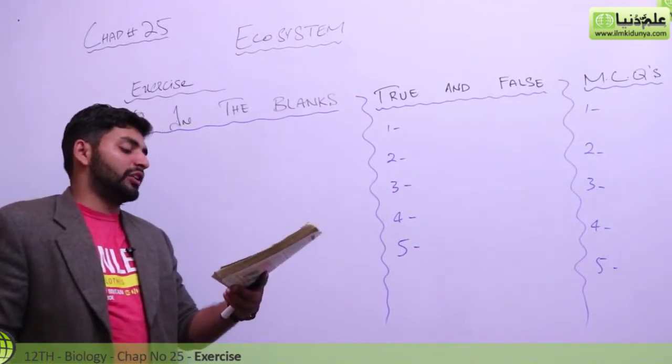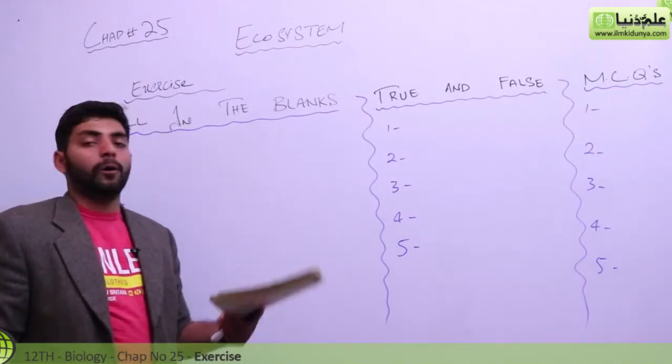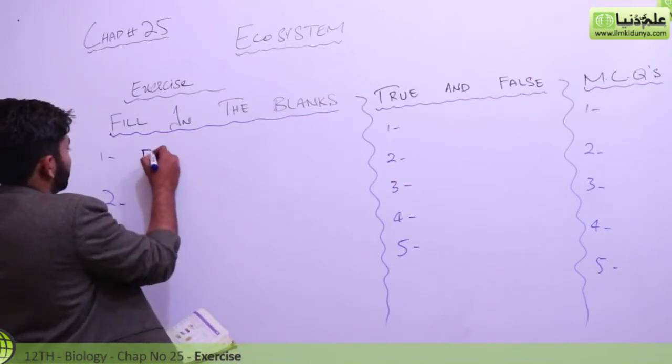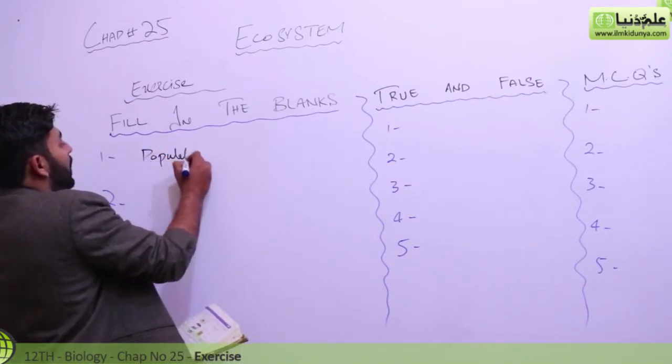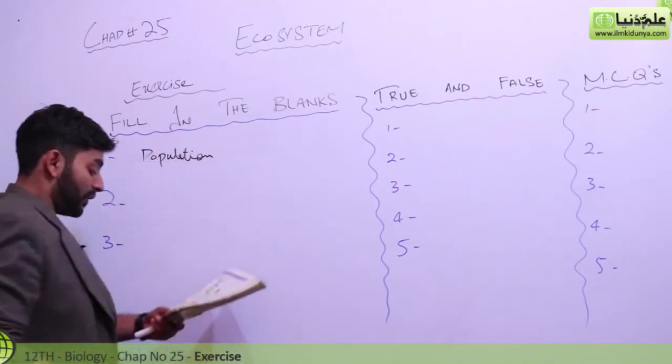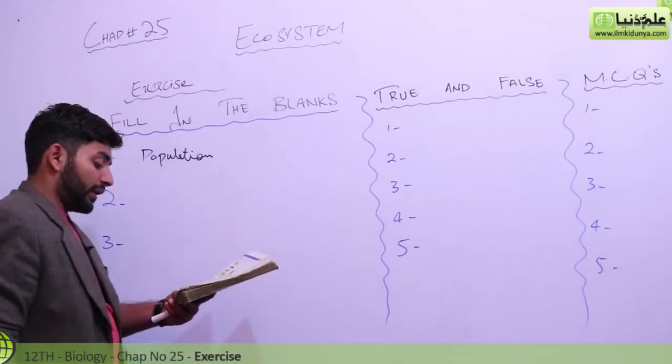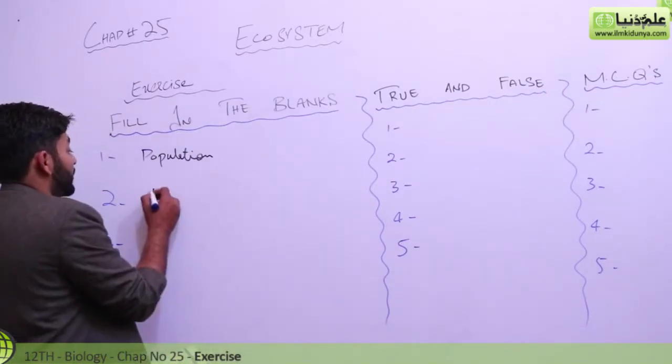A group of similar organisms living together in space and time is called population. Now the second one is, organisms which can synthesize their own food are called producers.